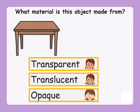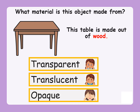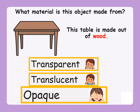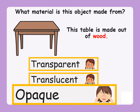Now, we have a table. What material is this object made from? This table is made out of wood. Is the wood transparent, translucent, or an opaque material? Wood is an opaque material because it does not let light through it.